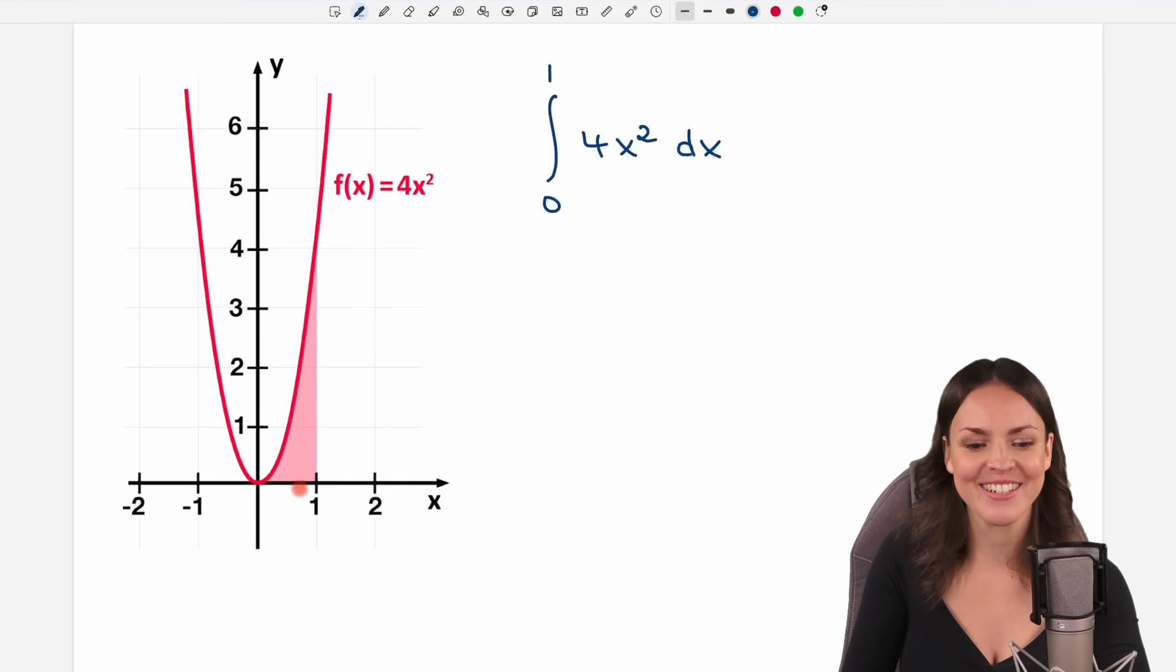This is going to be this area here, from 0 to 1 between our graph and the x-axis. This is what this integral means, and let's calculate this area then.